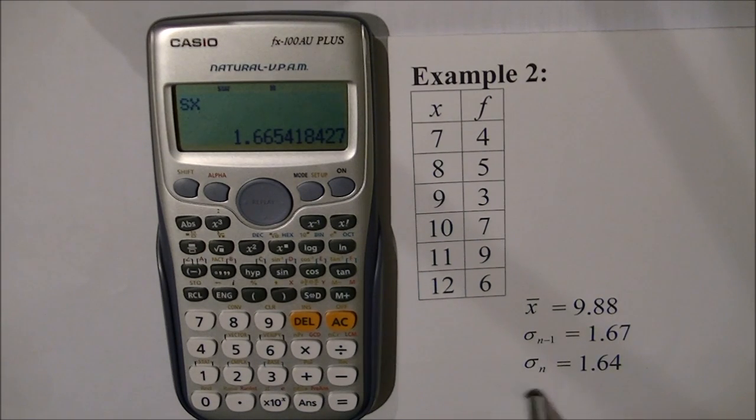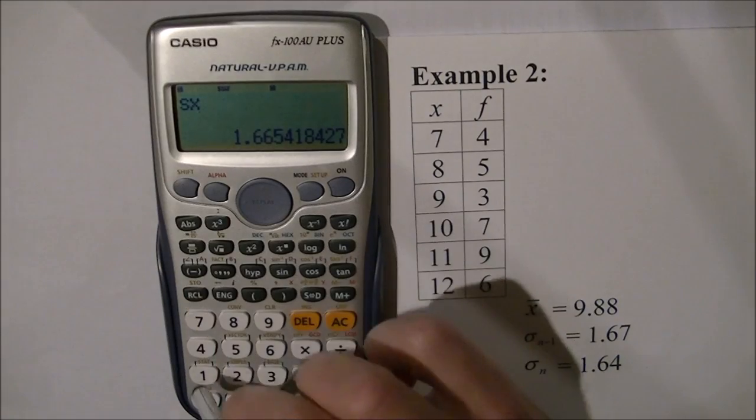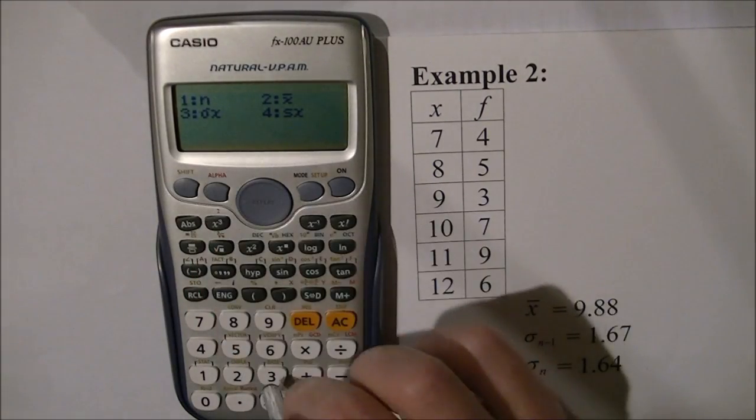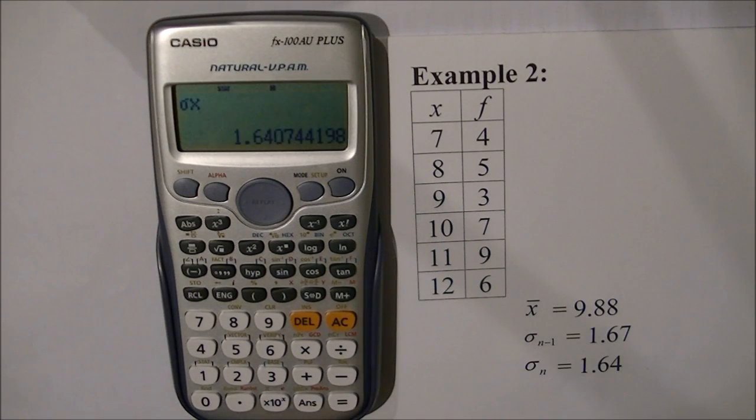Finally, I want the standard deviation. Press SHIFT 1, then variation, option 3. There we have it: 1.64.